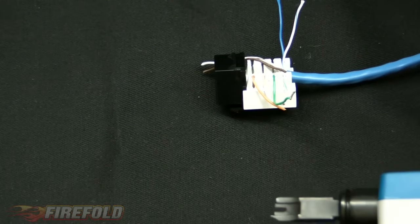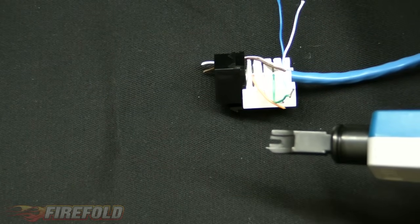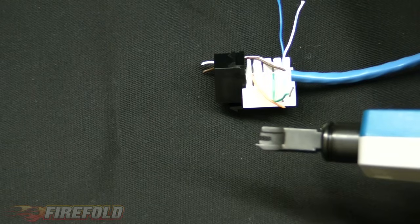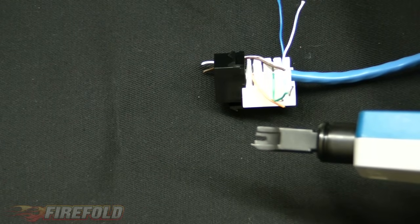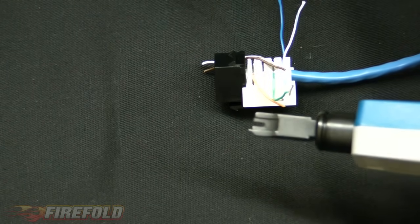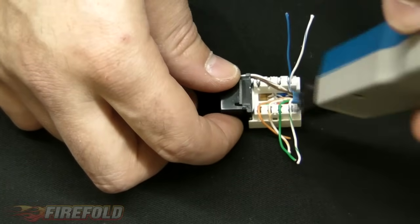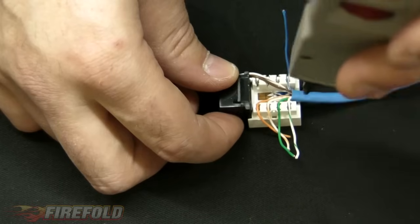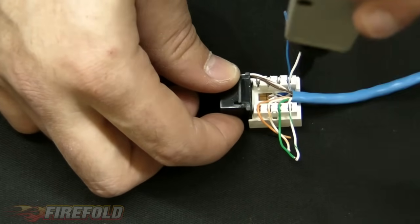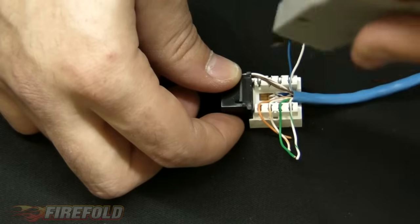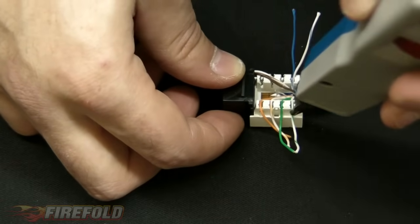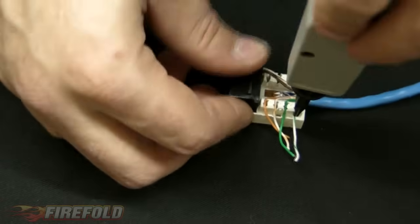Now you want to go ahead and take your punch down tool. And if you notice, there's two ends on it. There's a dull end, which is flat. And there's an end with a little nub sticking out. That is a blade. That's actually going to cut our excess wire off right here. You're just going to go through the side where we place the wires in, and punch down each one individually. That's going to put the wire down into the receiver so it'll get signal, and we're going to end up cutting the ends off.